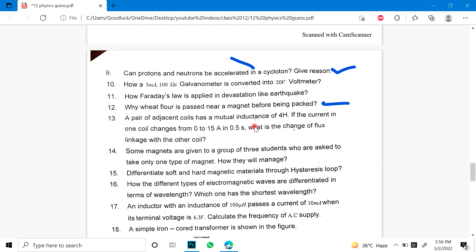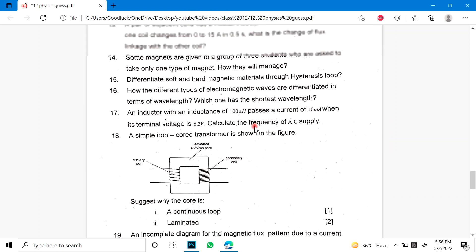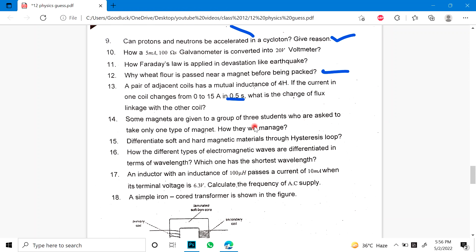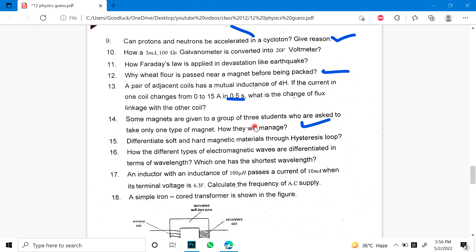13: A pair of adjacent coils has a mutual inductance of this. If the current in one coil changes from this to this in 0.5 seconds, what is the change of flux linkage with the other coil? 14: Some magnets are given to a group of 3 students who are asked to take only one type of magnet. How will they manage? 15: Differentiate between soft and hard magnetic materials. This is a little bit easier, by hysteresis loop. 16: How the different types of electromagnetic waves are differentiated in terms of wavelength? Which one has the shortest wavelength?